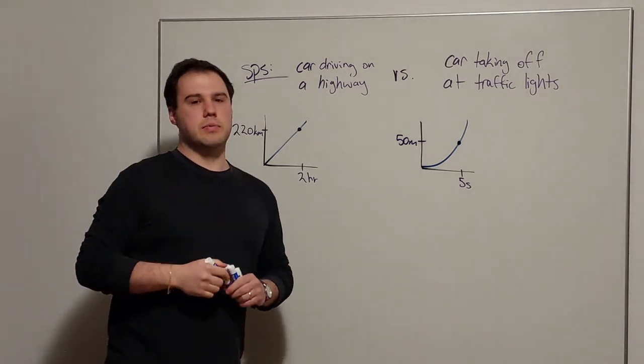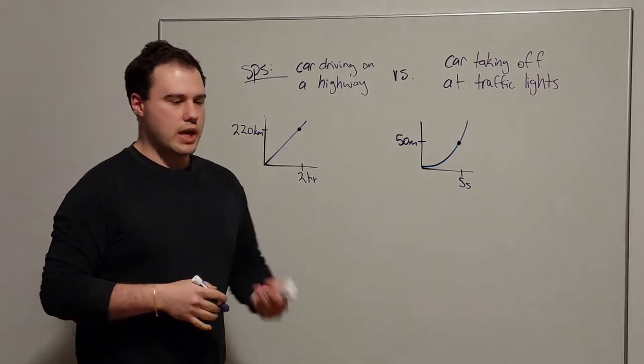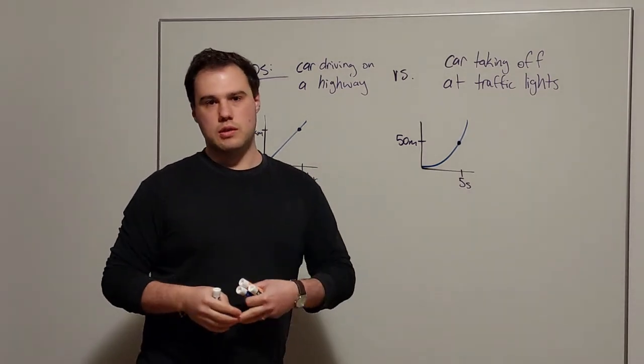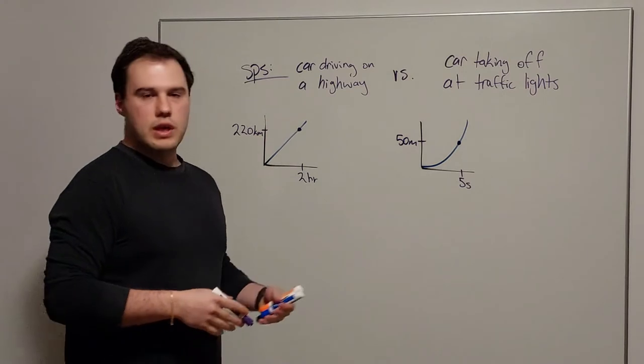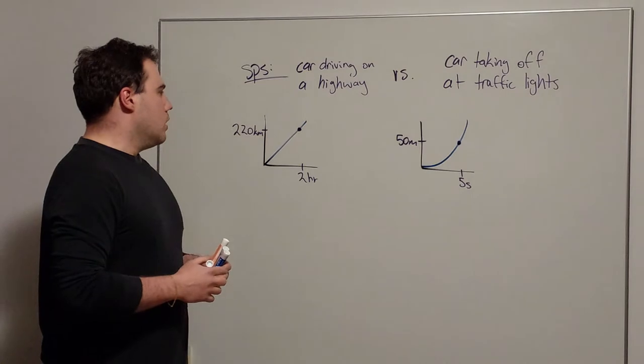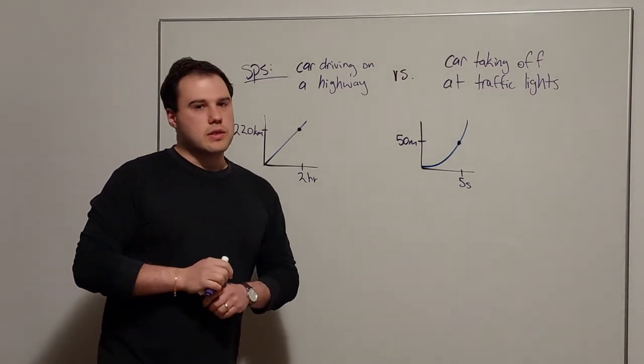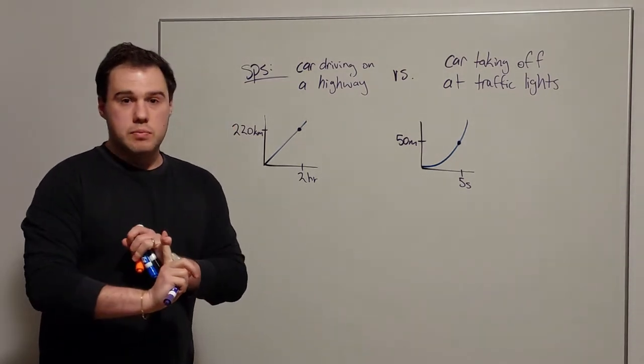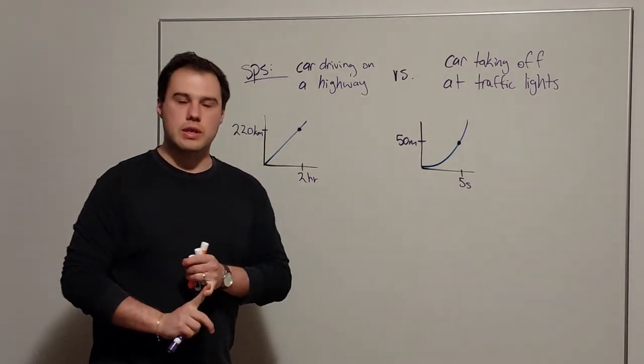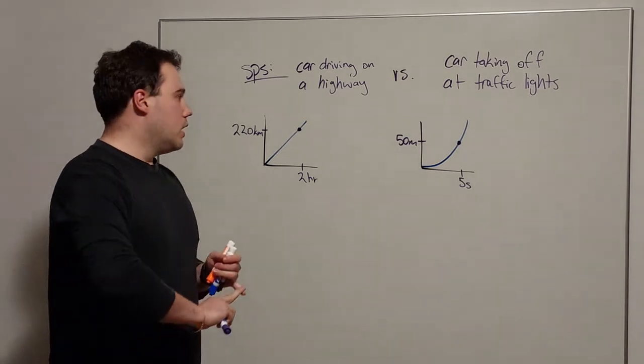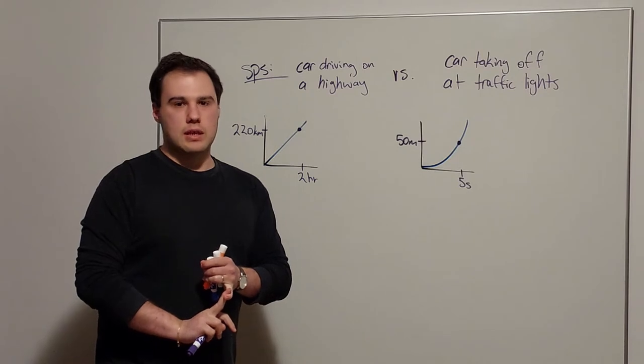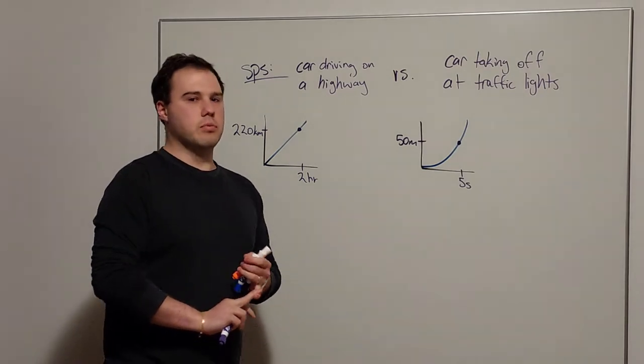So like I said, differential calculus is about rates of change. In this context with the vertical axis being distance and the horizontal being time, the rate of change here of distance over time would be the speed of the car. Now there's two different ways we can consider the speed though. One would be the average speed between the initial point at the origin and the specific points I've put on the graph, and the other one would be the instantaneous speed, which would be what's the speed at that particular point that I've put on the graph.